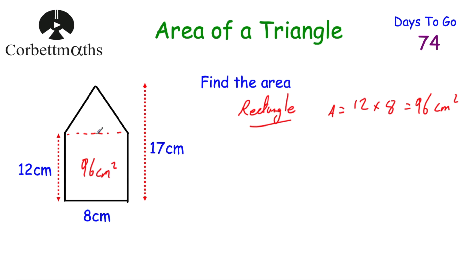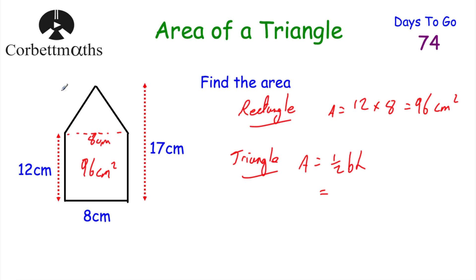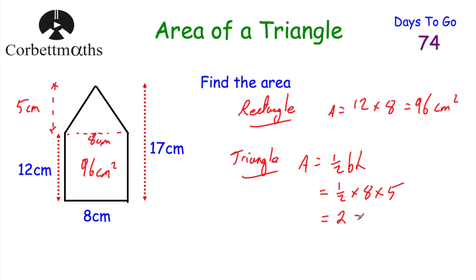For the triangle, the area is half the base times the height. The base of the triangle is 8 centimetres (same as the rectangle's width). The total height of the shape is 17 centimetres and the rectangle height is 12 centimetres, so the triangle's height is 5 centimetres. Half of 8 times 5: 8 times 5 is 40, half of 40 is 20. So the area of the triangle is 20 centimetres squared.